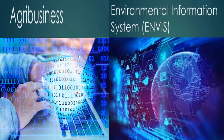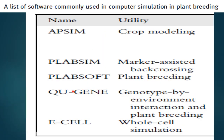Environmental information system — ENVIS: created by the Ministry of Environment and Forest, Government of India, headquartered in Delhi, with 25 centers all over the country. The centers work for generating a new network of databases in areas like pollution control, clean technologies, remote sensing, coastal ecology, biodiversity, wildlife, Himalayan ecology, and mining. Commonly used software in computer simulation in plant breeding includes e-Cell for whole cell simulation, and Q-Gene for genotype-by-environment interaction and plant breeding.